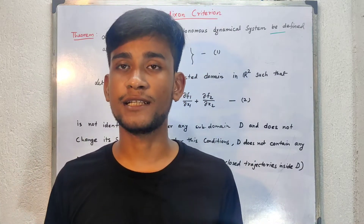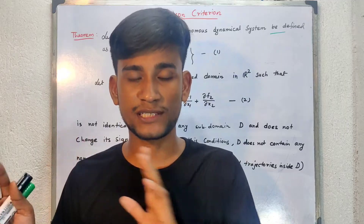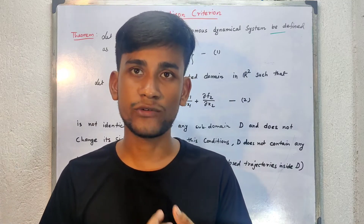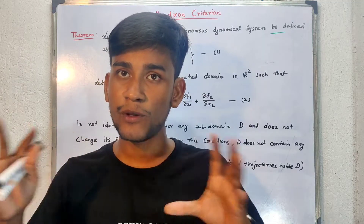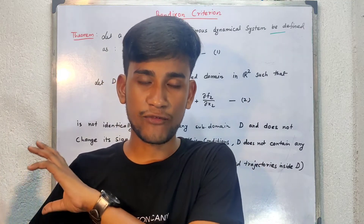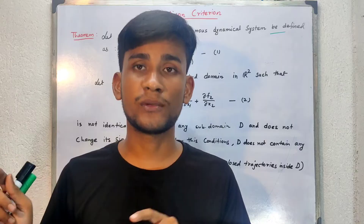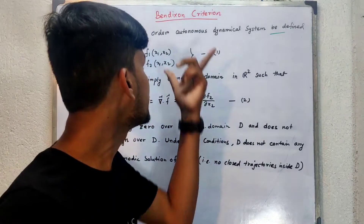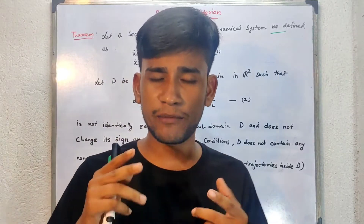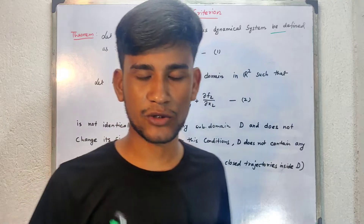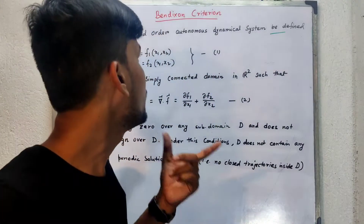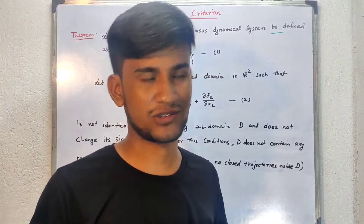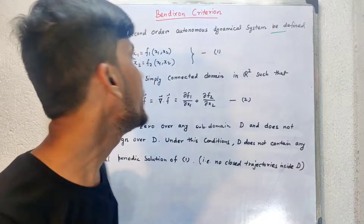In the recent years, the trend of the questions of CSI NET in the section of ordinary differential equations — there are some questions which are directly based on this type of concept, which is from the autonomous dynamical system. We will also discuss some examples of CSI NET problems. First, we are going to discuss the Bendixson criteria, and then we come to the Poincaré-Bendixson theorem.